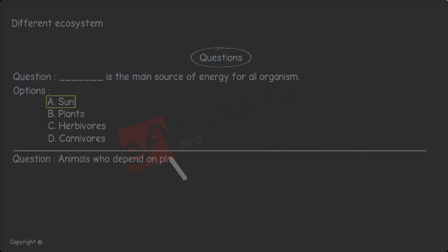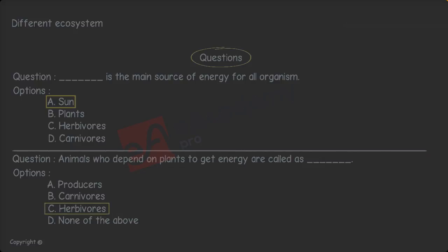Animals who depend on plants to get energy are called as. The options are A. Producers, B. Carnivores, C. Herbivores, D. None of the above. The correct option is option C. Herbivores.